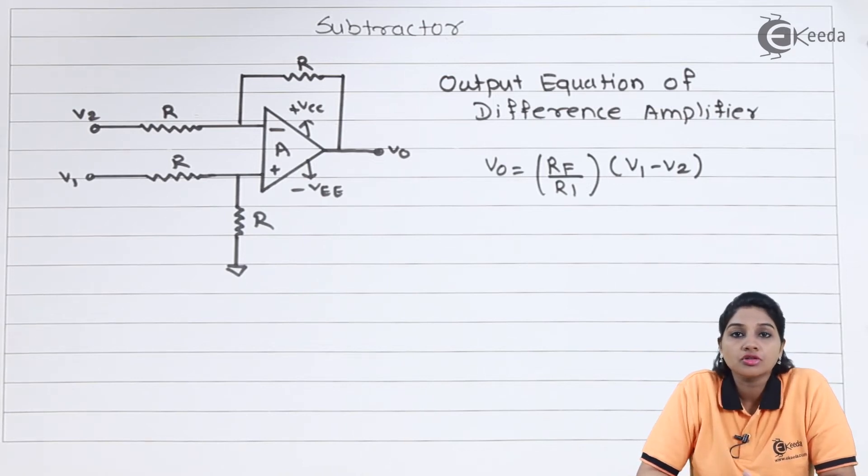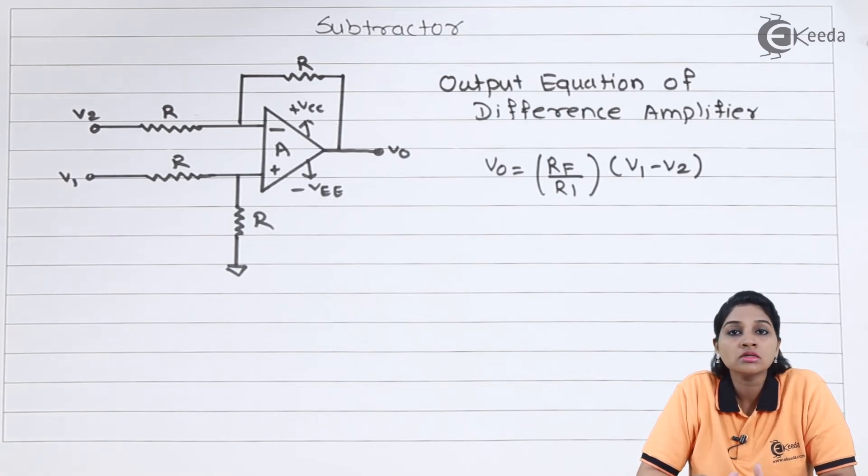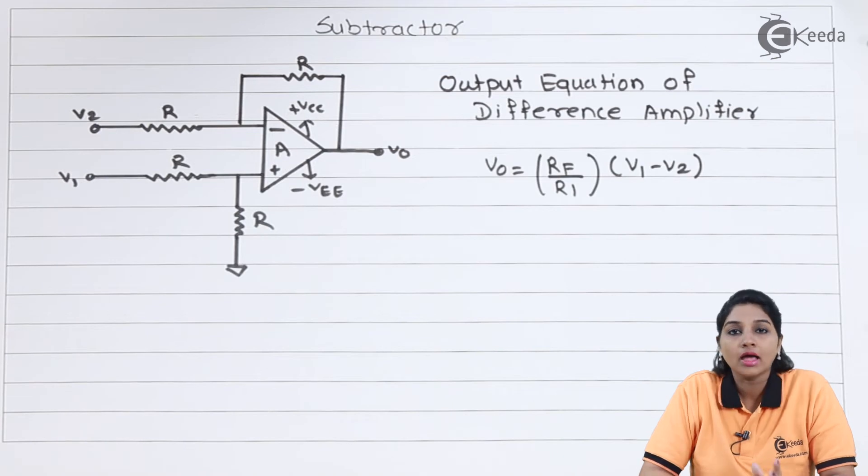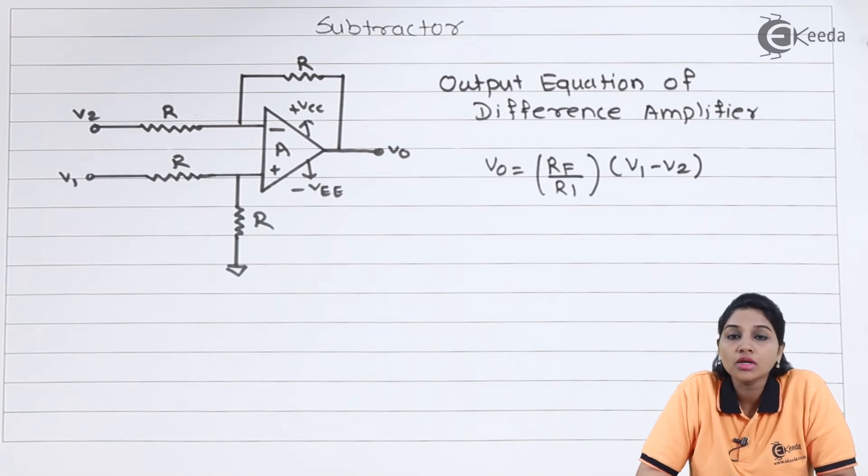In second condition, when we connect V2 to ground and we consider V1 as input, then in that case the circuit is similar to non-inverting amplifier and we'll get output equation as V01 equals RF by R1 times V1.